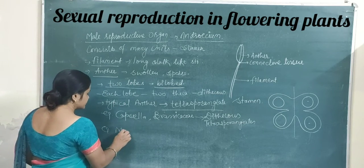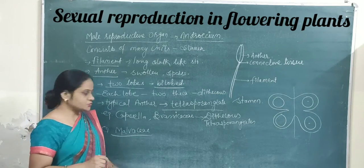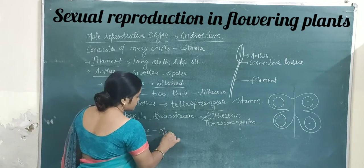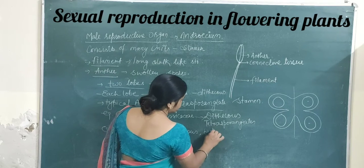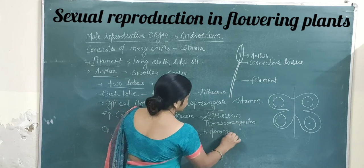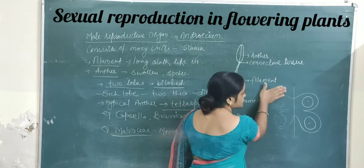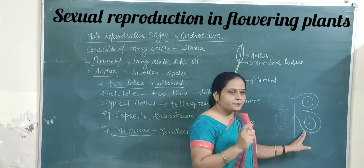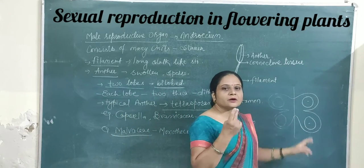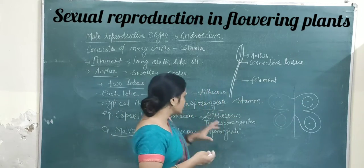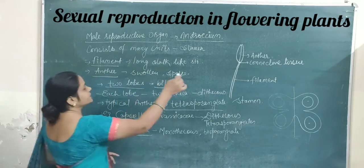A second example is from the Malvaceae family, to which lady finger belongs. In this family, the thecous condition is monothecous — only one lobe is present instead of two. And since only one lobe with two sporangia is there, it is known as the bisporangiate condition.